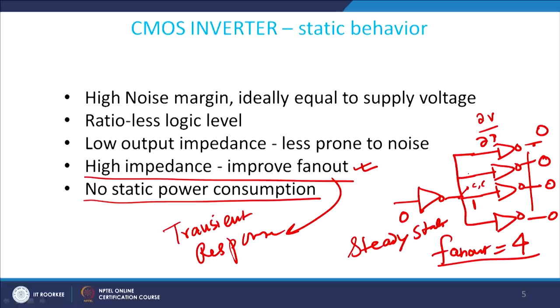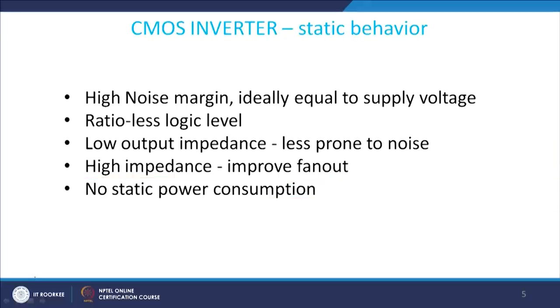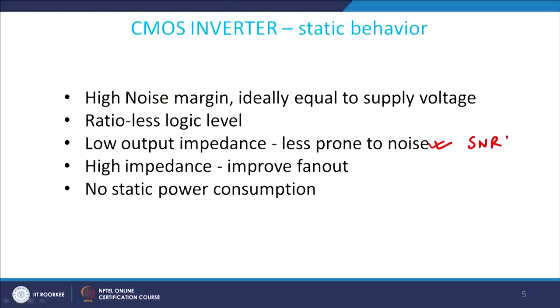Low output impedance: this is an important point. Low output impedance primarily means the device is less prone to noise. If there are any noise sources at the output of the NMOS, they can be easily rejected, providing a noise-free environment. Therefore, signal-to-noise ratios (SNR) at the output are typically very high.